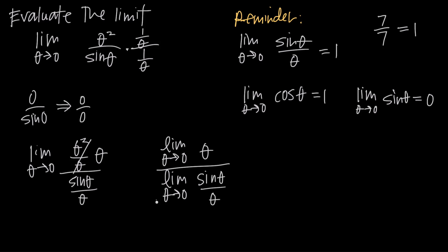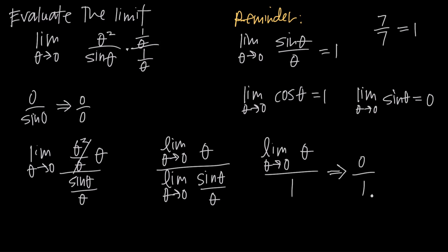Notice what we have: in the denominator, we have the limit as theta goes to 0 of sine of theta divided by theta, which is exactly the known form. We know that equals 1. So we have the limit as theta approaches 0 of theta, all divided by 1, because the entire limit in the denominator becomes 1. In the numerator, the limit as theta goes to 0 of theta — we just plug in 0 — and we get 0.